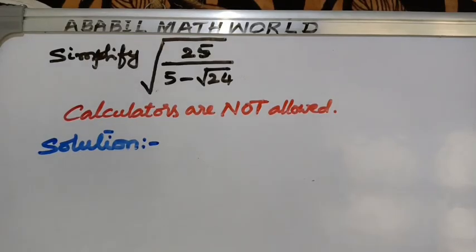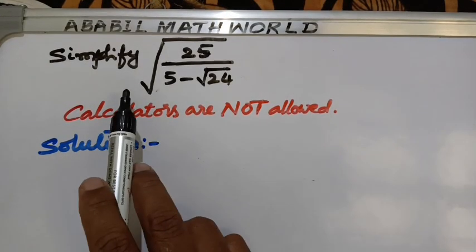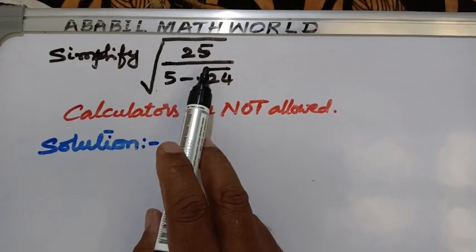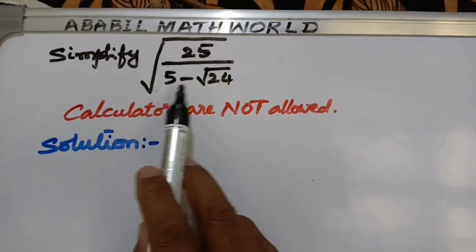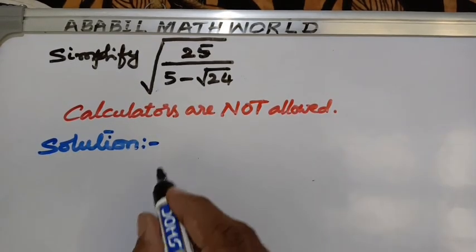Hello, welcome to math — Ababil Math World. Today we are going to solve a problem: simplify square root of 25 divided by 5 minus root 24.